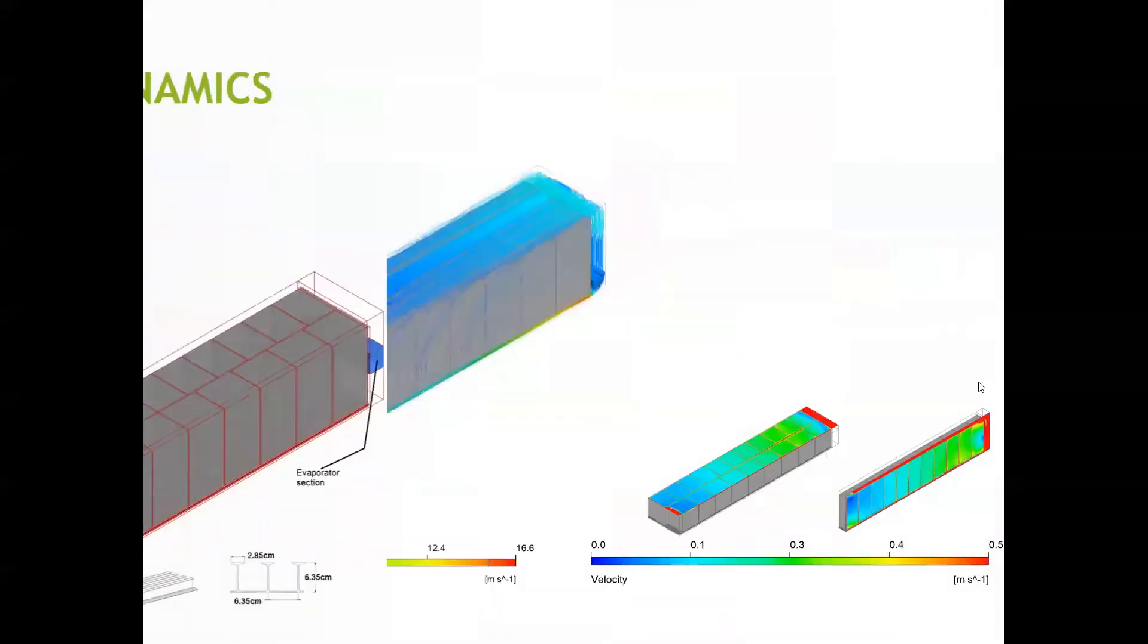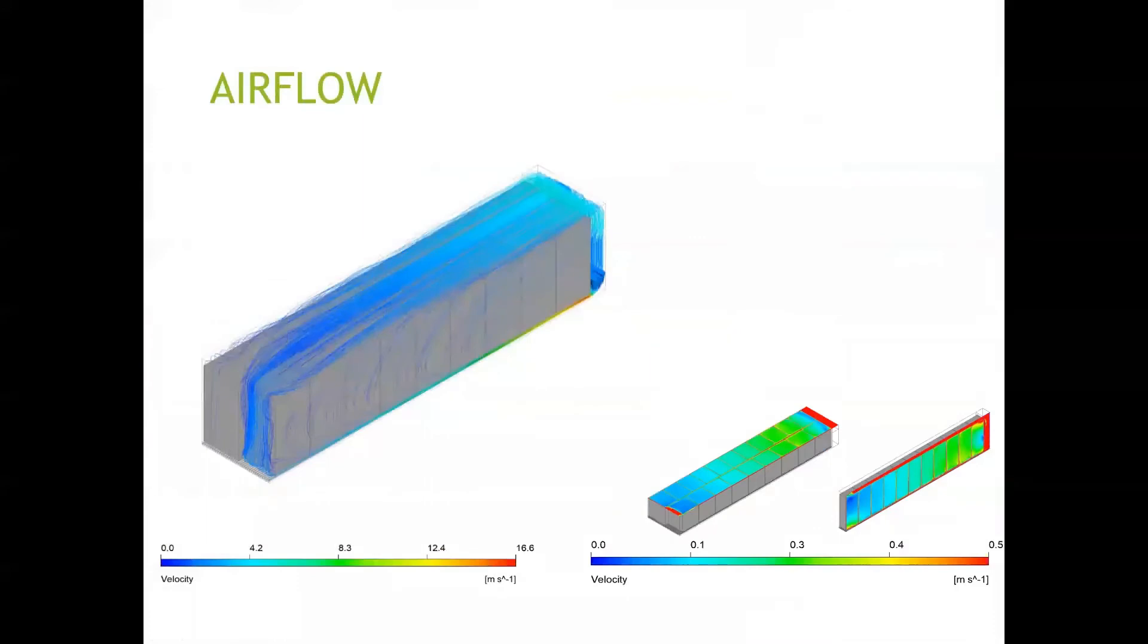Using this model, we are able to simulate the airflow distribution inside the container. As you see in this animation, we show air entering the T-bar at the bottom at high velocity reaching up to 17 meters per second, and velocity is higher in the free region above the pallet, whereas it is very low in the region occupied by the fruit due to the resistance.